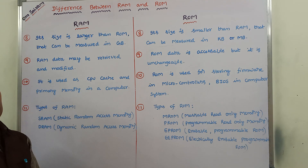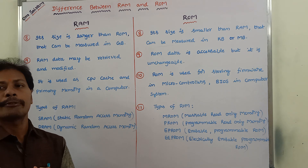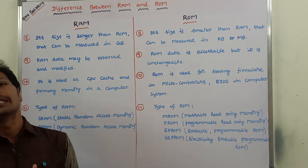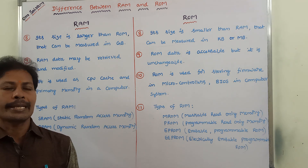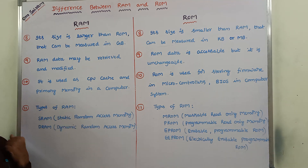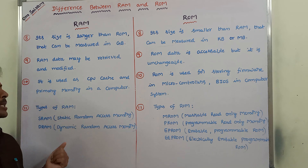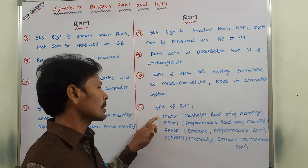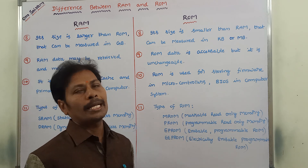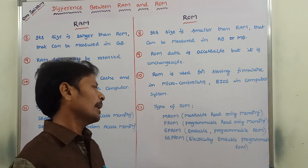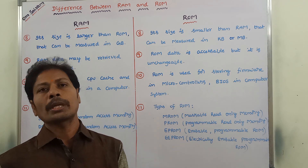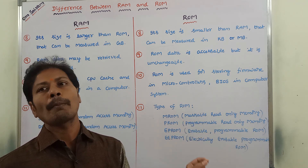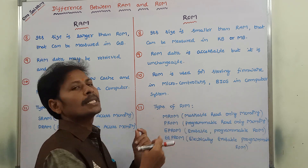Types of RAMs: there are two types — SRAM (Static Random Access Memory) and DRAM (Dynamic Random Access Memory). Types of ROMs: first is MROM (Mask Read-Only Memory), second is PROM (Programmable Read-Only Memory), third is EPROM (Erasable Programmable Read-Only Memory), and fourth is EEPROM (Electrically Erasable Programmable Read-Only Memory). For types of ROMs, see the previous video.